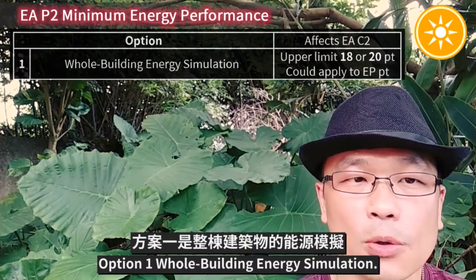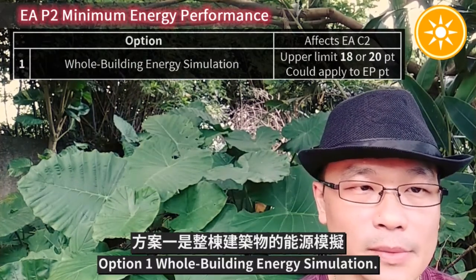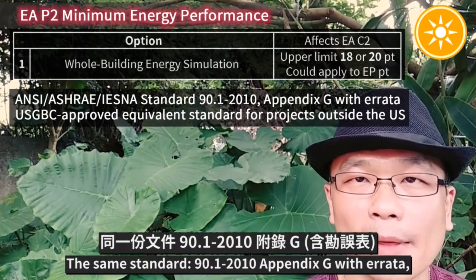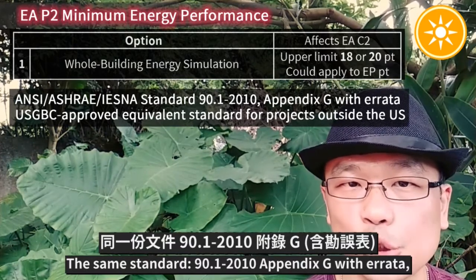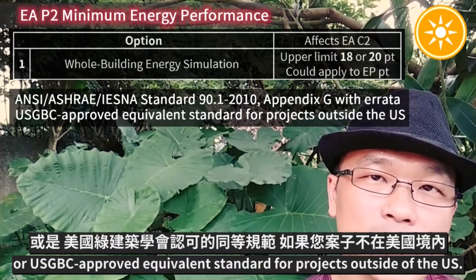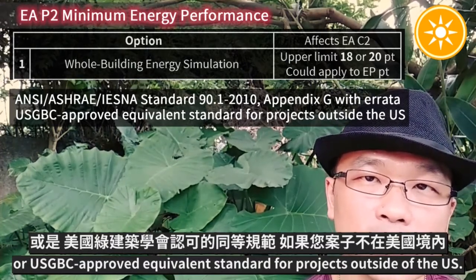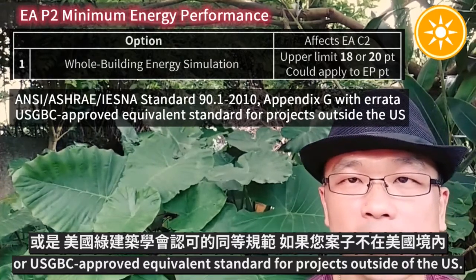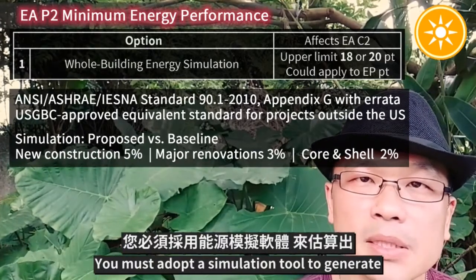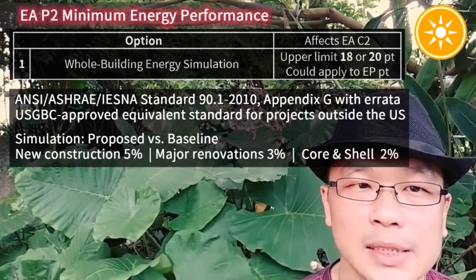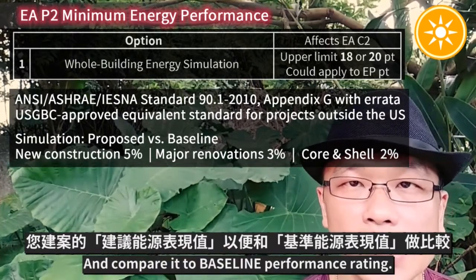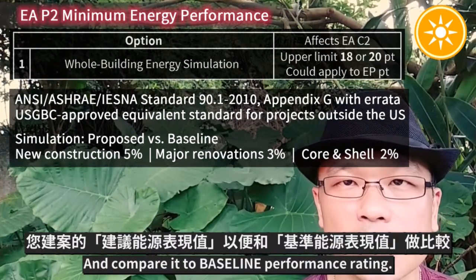Option 1: Core Building Energy Simulation. The same standard, 90.1-2010, Appendix G with Illata, or a USGBC-approved equivalent standard for projects outside the US. You must adopt a simulation tool to generate your proposed building performance rating and compare it to the baseline performance rating.